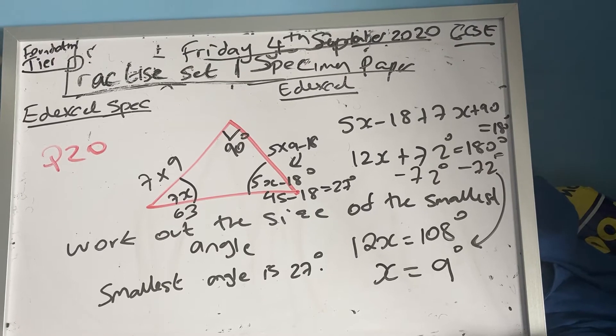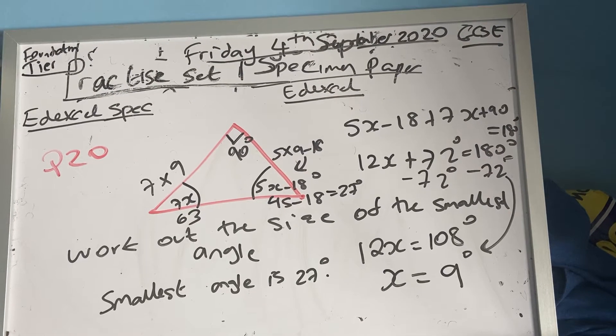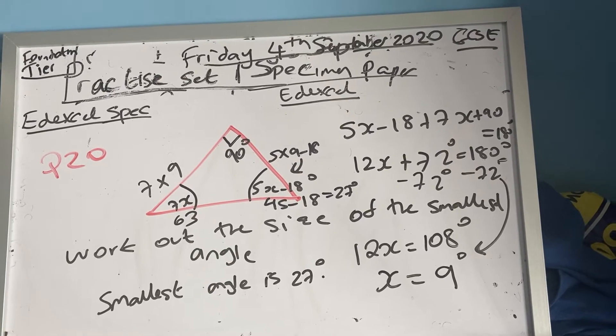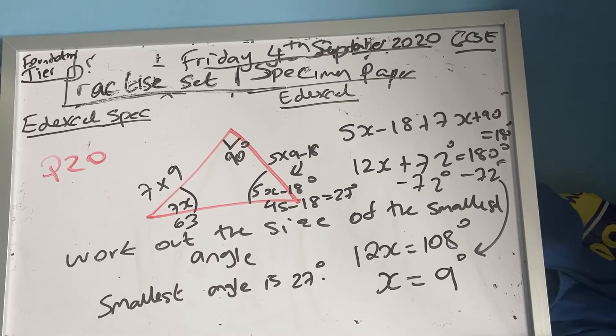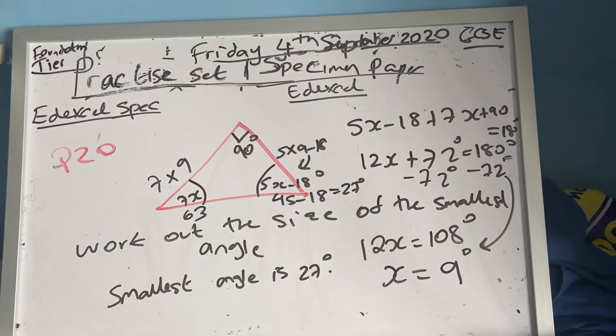A right angle triangle means that one of my angles is going to be 90 degrees. Angles in the triangle add up to 180, so 7x plus 5x minus 18 plus 90 has to equal 180.